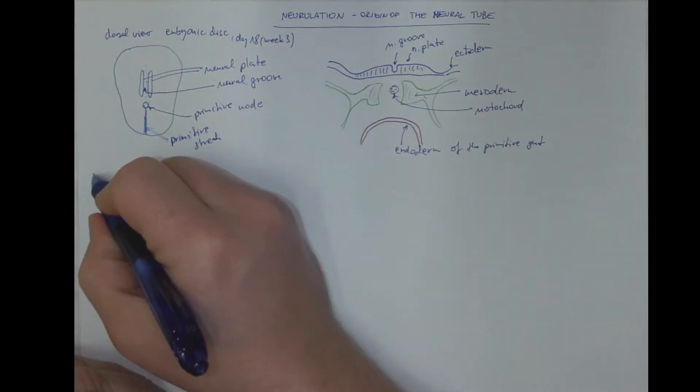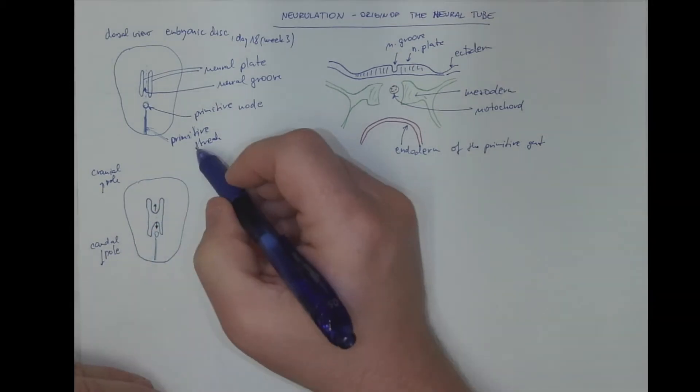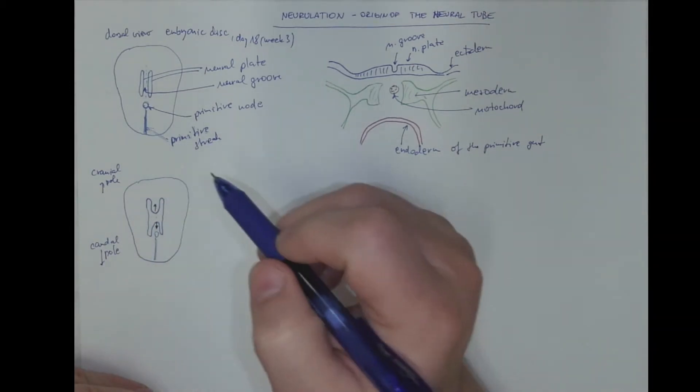Here is the cranial pole. And here, of course, the caudal pole, as could be seen from the position of the primitive streak.